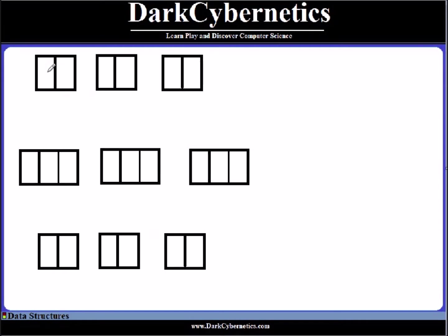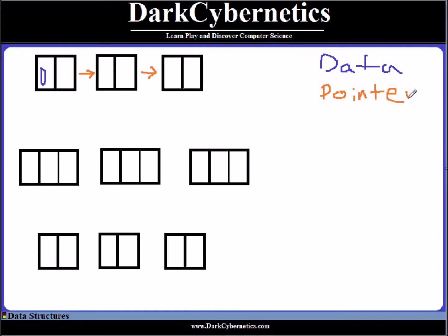In this video, we will discuss the three data structure concepts involving linked lists, where we have the singly linked list where the data is held in one part of the node and we have a pointer which points to the next node. We will talk about three types of linked lists: the singly linked list, the doubly linked list, and the circular linked list, and we will talk about the differences and some of the operations they can perform.